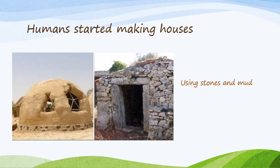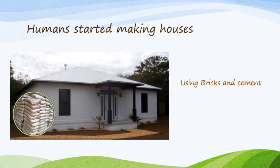Then they started making houses made up of stones and mud. With the help of mud and stone, they made these houses. And children, even today you can find houses made up of mud and stone. Nowadays, houses are built with cement and bricks — they are much stronger. These cemented houses made up of cement and bricks are much stronger.